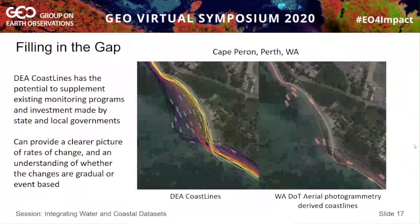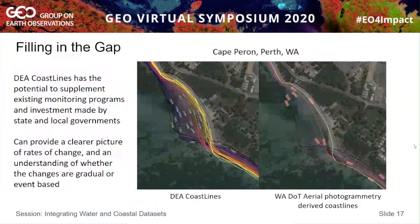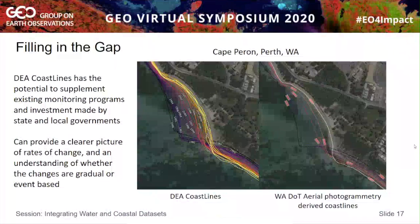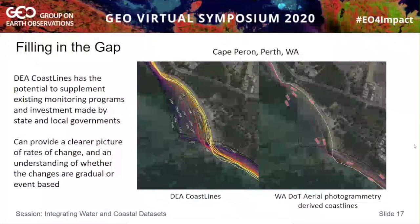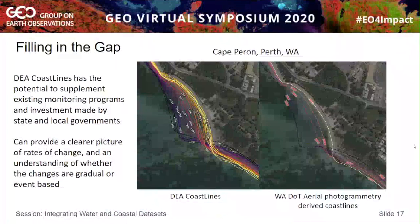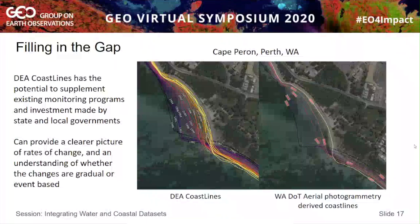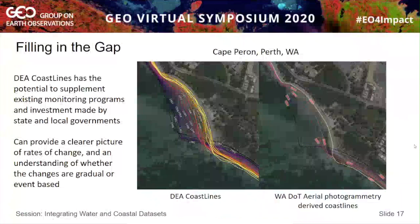This data has the potential to supplement investment being made by state governments in monitoring programs. Western Australia's Department of Transport has been doing aerial photography and photogrammetry surveys for many years to capture coastal change, but that is expensive so they do it only once every five years or so. By producing a yearly shoreline, we can supplement that and provide a clearer picture of different rates of change — whether changes between years are gradual or event-based — becoming a complementary dataset alongside aerial photography.